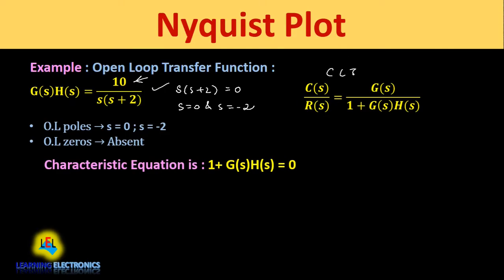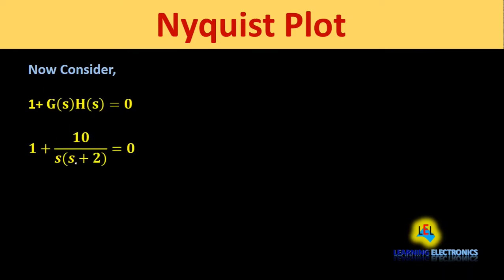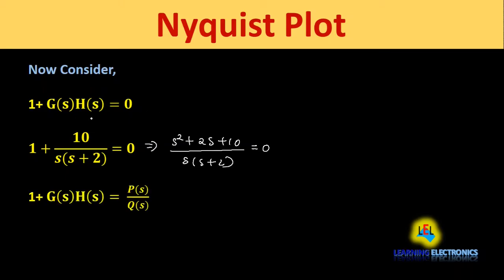Now looking at the closed loop transfer function, when we equate the denominator 1 + G(s)H(s) = 0, we get the characteristic equation. Substituting G(s)H(s), we get 1 + 10/[s(s+2)] = 0, which simplifies to (s² + 2s + 10) / [s(s+2)] = 0. Let us assume 1 + G(s)H(s) = P(s)/Q(s), so P(s) = s² + 2s + 10 and Q(s) = s(s+2).